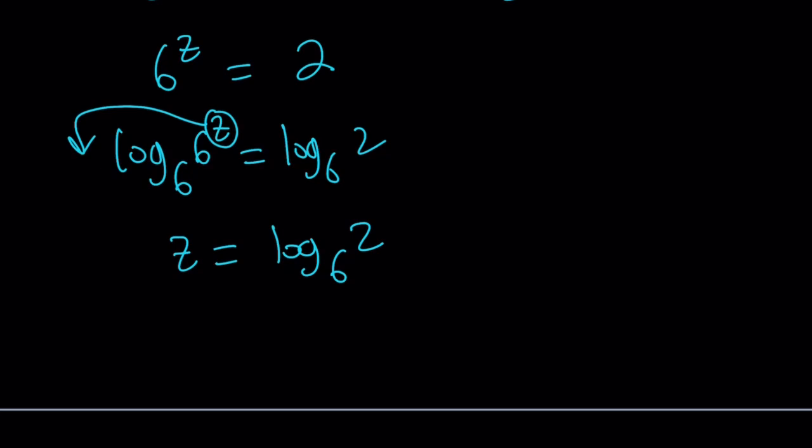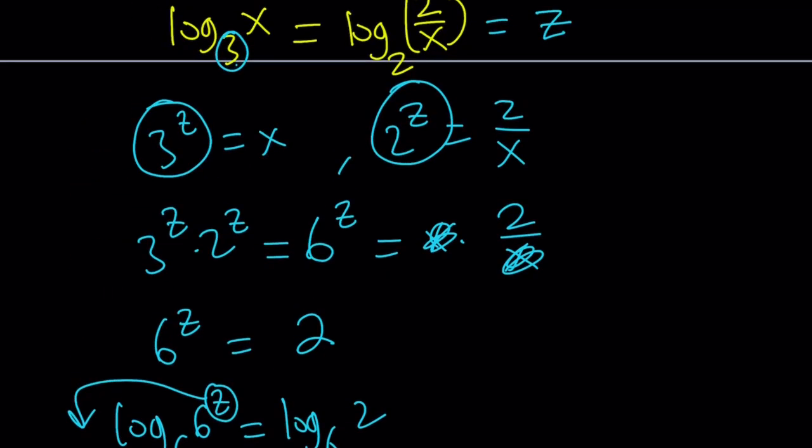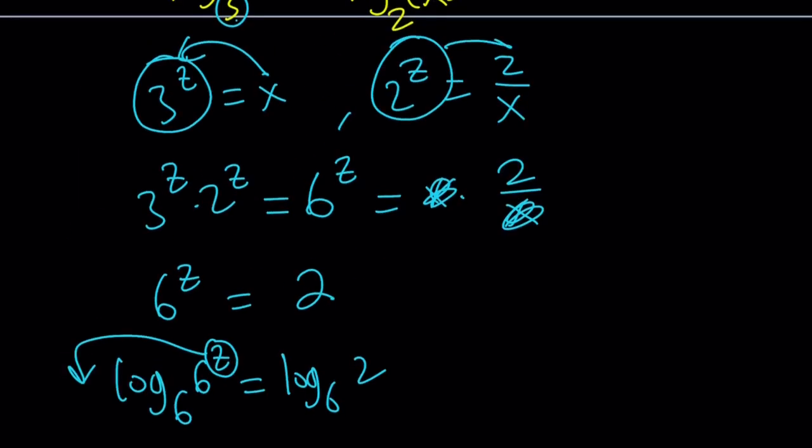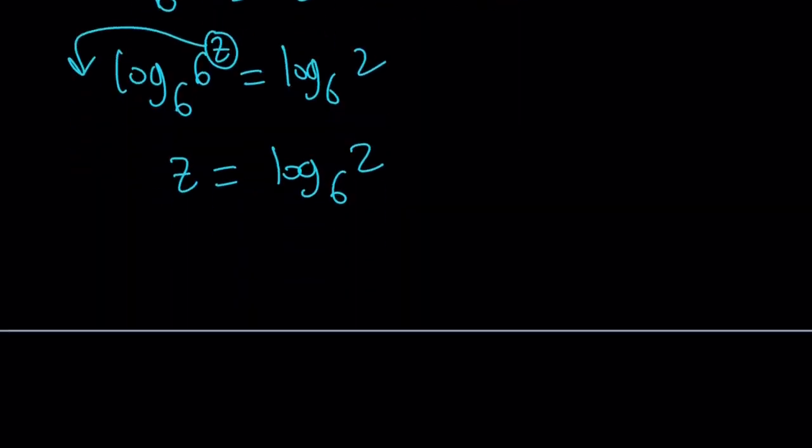But z is not the goal. x is the goal. And remember, x is 3 to the power z, or the other one. Doesn't matter, same thing. But I like the first one better. So x equals 3 to the power z, which equals 3 to the power log 2 with base 6. So that's the answer.